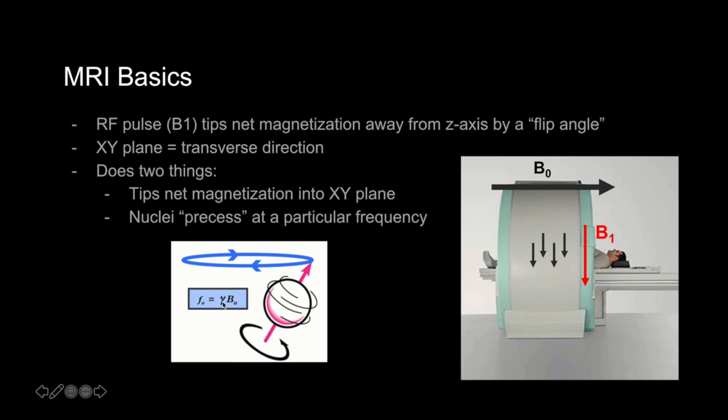The frequency also depends on the nucleus itself, which is reflected in this term here, gamma, which is the gyromagnetic ratio. If that's too much for now, just remember that the RF pulse does two things. It tips the magnetization into the xy plane from the z-axis and causes the protons to precess or wobble in sync at a particular frequency.